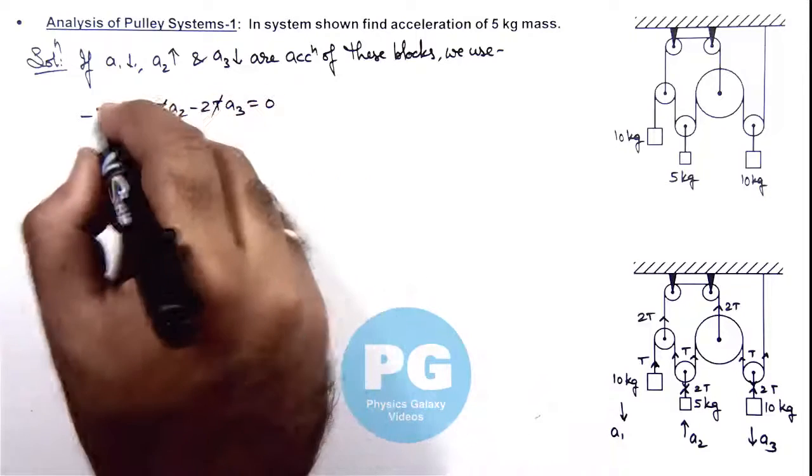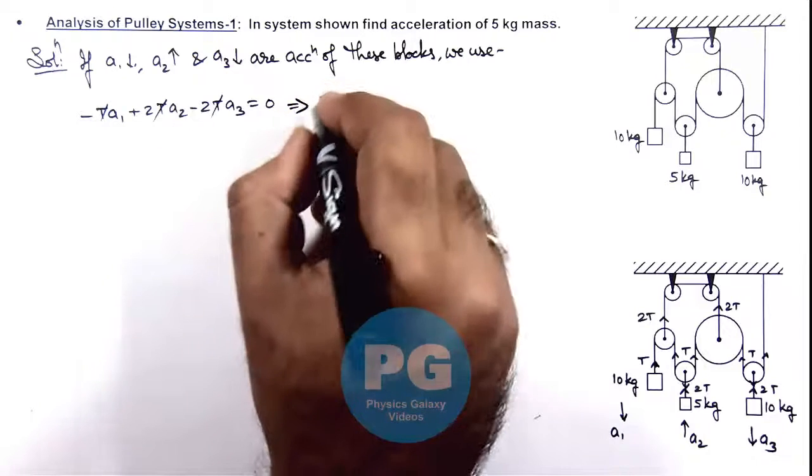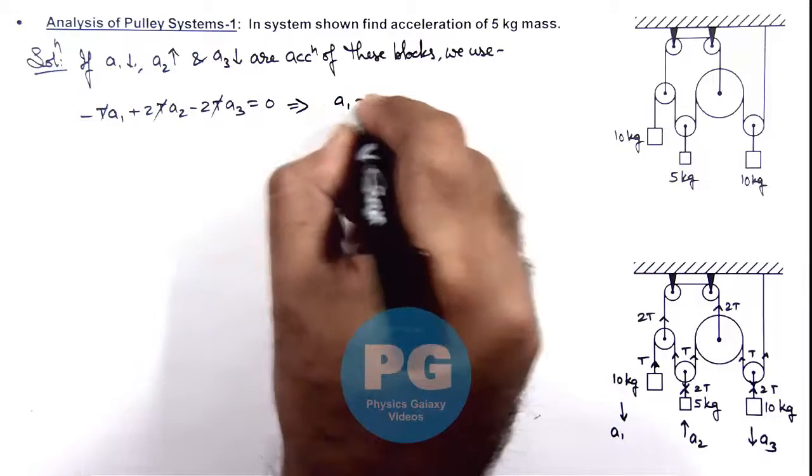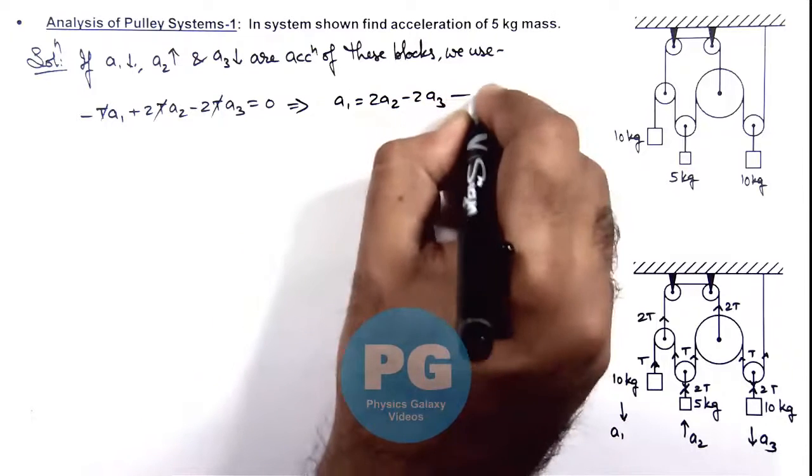For the 5 kg, it is plus 2T·a_y2. For the other 10 kg, it is minus 2T·a_y3, and this should equal zero. T gets cancelled out, and on simplifying this result, we get a_y1 equals 2a_y2 minus 2a_y3. This is the first equation.